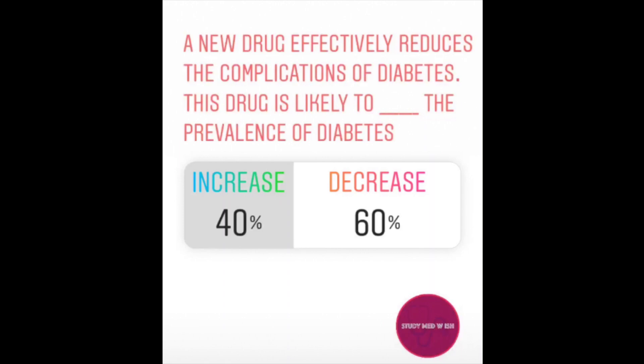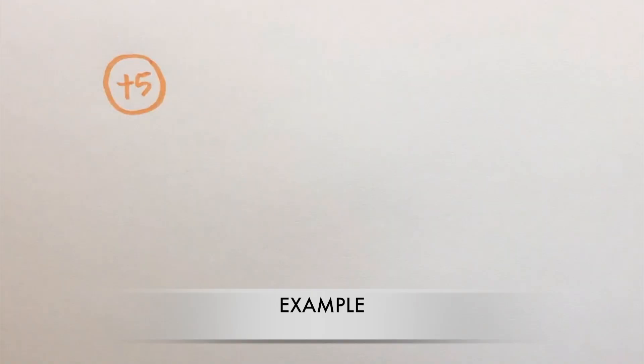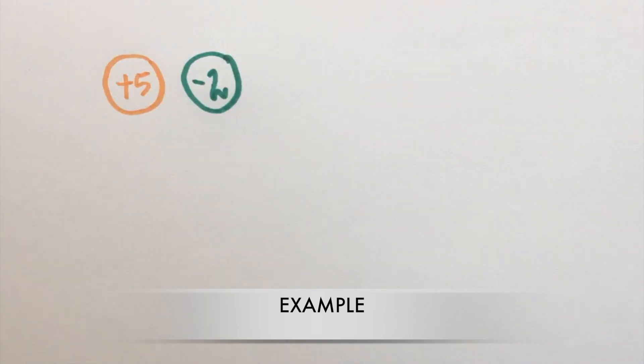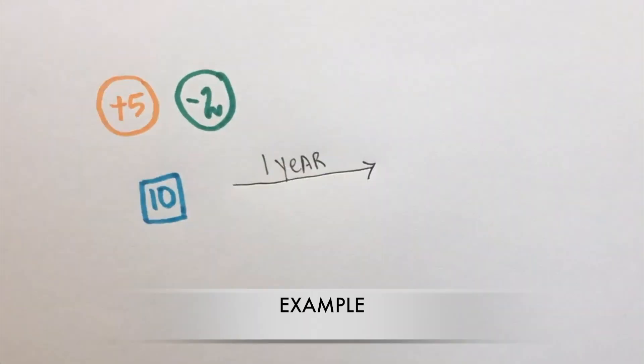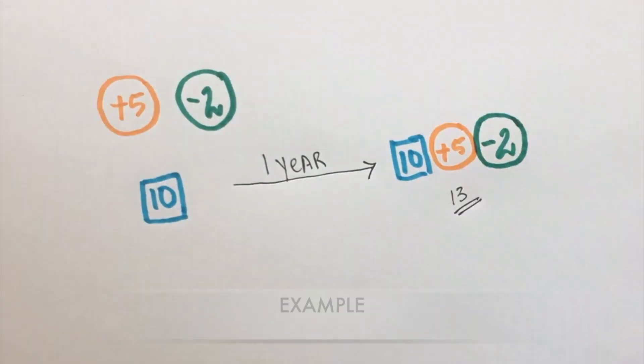Question number one: a new drug effectively reduces the complications of diabetes. This drug is likely to dash the prevalence of diabetes. Let's assume there are 5 new cases of diabetes every year. Usually, 2 people die every year from the complications of diabetes in our little population. Currently, there are 10 people who have diabetes. One year later, we would have 10 plus 5 minus 2 cases overall.